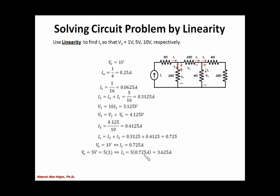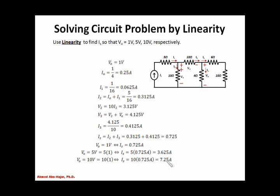For part C, we increase the output to 10 volts, which is an increase by a factor of 10. That means the input also increases by a factor of 10, and IS will be 10 times the original current, which is 7.25 amps.